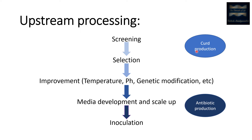To find out which bacteria are able to ferment the milk, we have to perform screening. Once we found out which bacteria are able to ferment, we must select which one is giving a high amount of curd — the best curd. Then we must perform improvement, like changing the temperature and pH, to see at what parameters the bacteria produce the best curd with high nutritional value. Nowadays, scientists are also able to perform genetic modifications to give the best product.